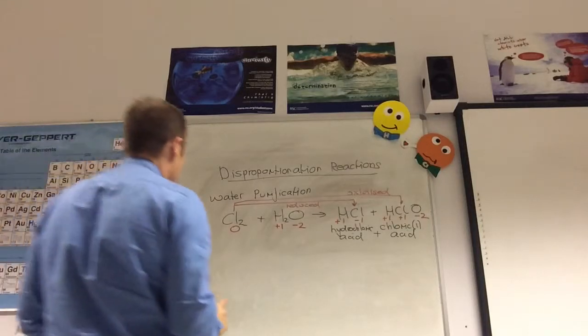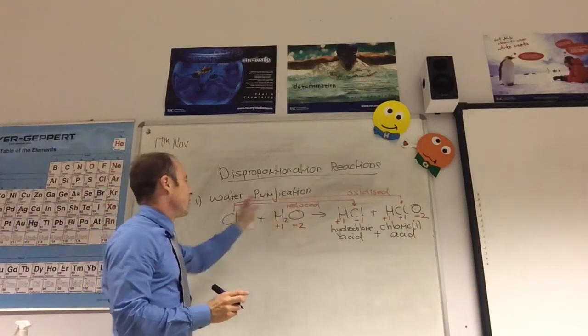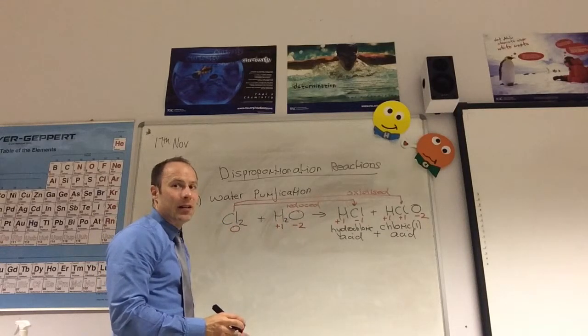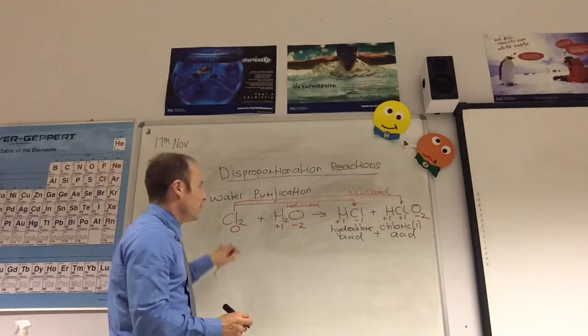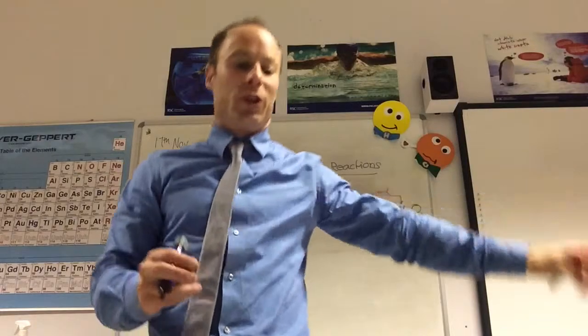The oxidation number of one element goes up and down. So one element, the oxidation number of one atom, the oxidation number increases, and the other atom, the oxidation number decreases. And that's what a disproportionation reaction is. So it's chlorine both goes up and down. The other example is the formation of bleach.